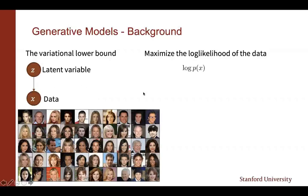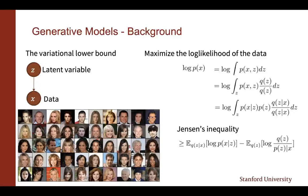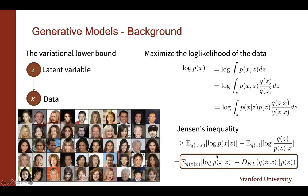We can introduce a variational distribution Q(z), and after a little bit of math using Jensen's inequality, we can maximize the likelihood of data by maximizing the variational lower bound. This quantity is called the variational lower bound. In order to maximize the likelihood of data, we end up maximizing this variational lower bound.